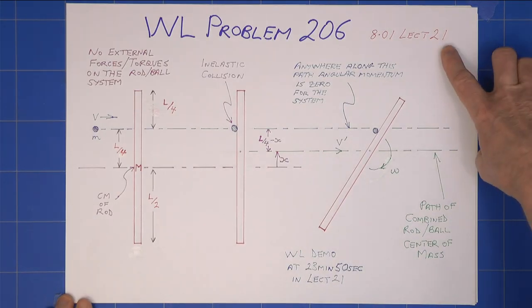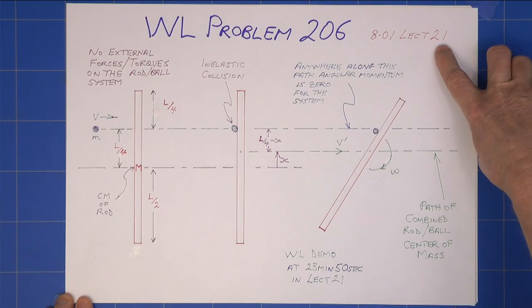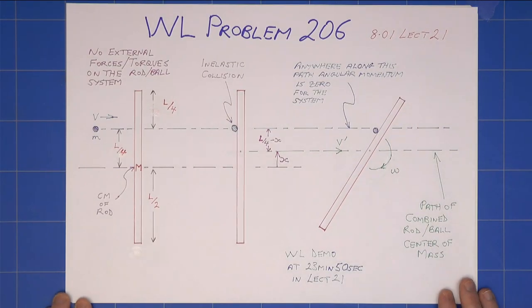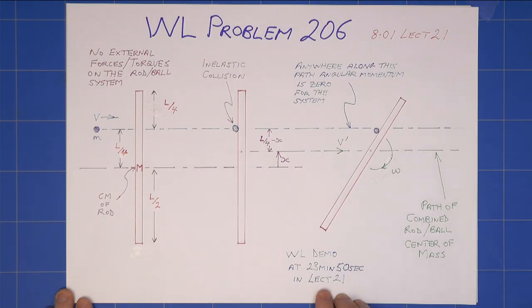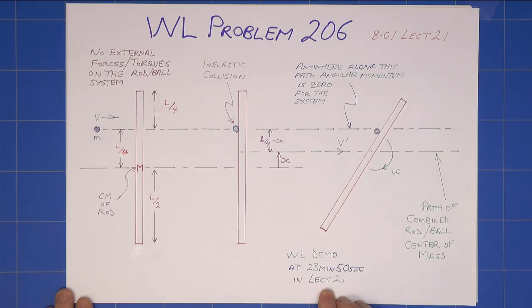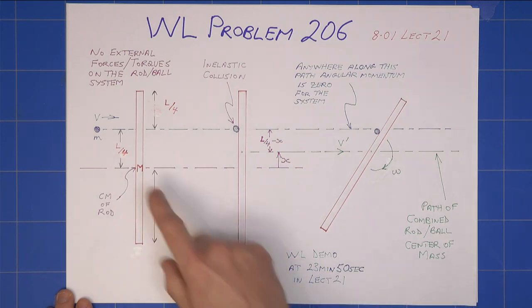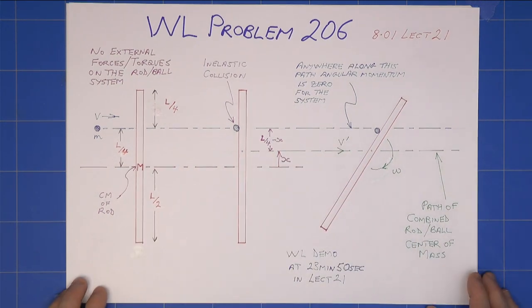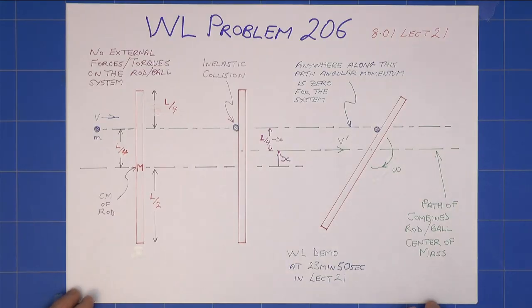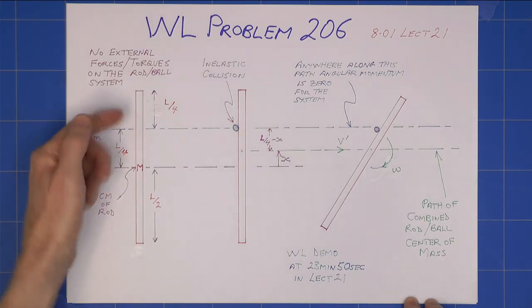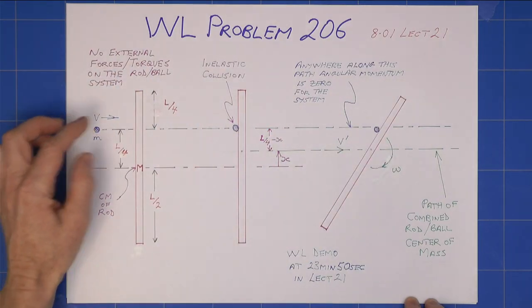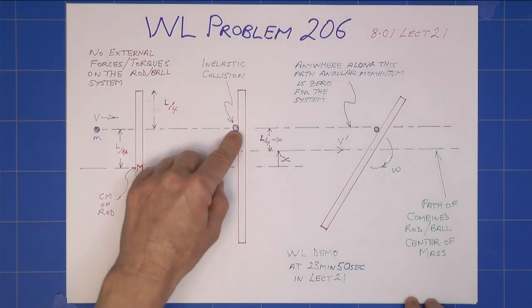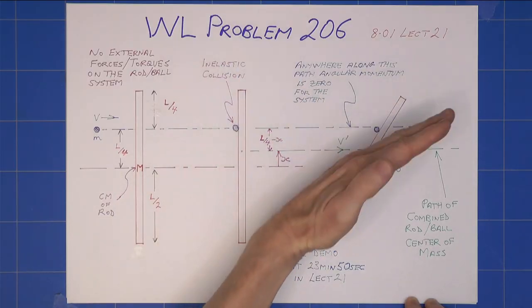This is Keith's solution to Walter Lewin's problem 206. And I strongly suggest that everyone looks at his lecture 21 of 8.01. It's entirely relevant to this. In particular, the demonstration at 23 minutes 50 seconds in that lecture. But he explains in great detail what is going on in a situation like this. We have a clay ball that strikes a rod. The rod is free to move. There's no pivot restricting it. The clay ball sticks to the rod.